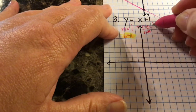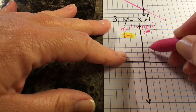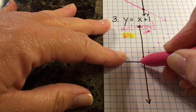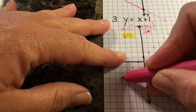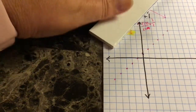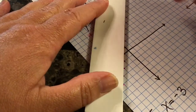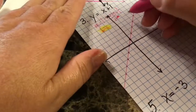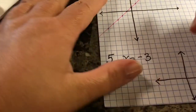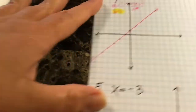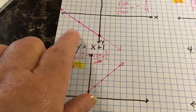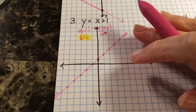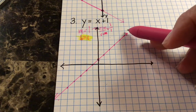I go to the origin and up one on the y-axis, then rise and run for slope. Rise over run is one over one — rise one, run one to the right, rise one, run one to the right, and so on. Your line should span the entire coordinate plane area, with arrows on the ends — otherwise it's just a line segment.